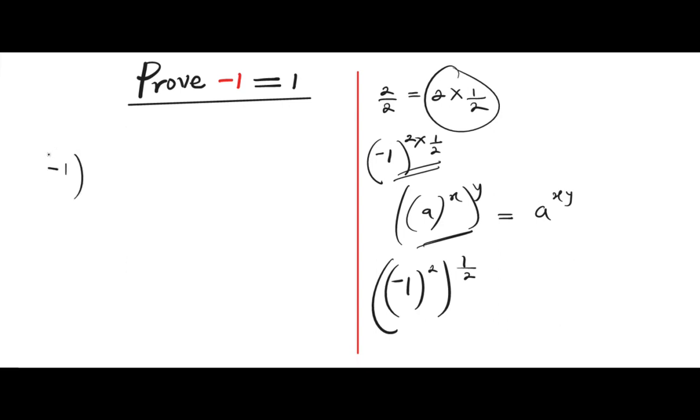Negative 1 raised to the power of 2 raised to the power of half. So let's concentrate on what we have inside here. That is negative 1 raised to the power of 2. And negative 1 raised to the power of 2 equals 1. So if you replace 1 here, you're going to have 1 raised to the power of half.